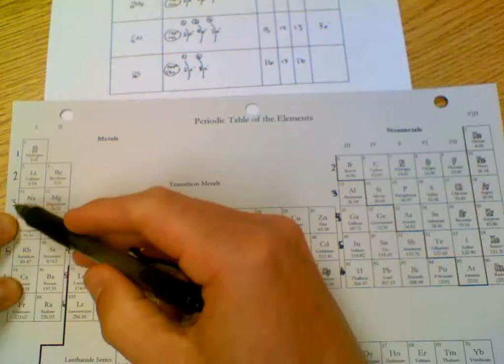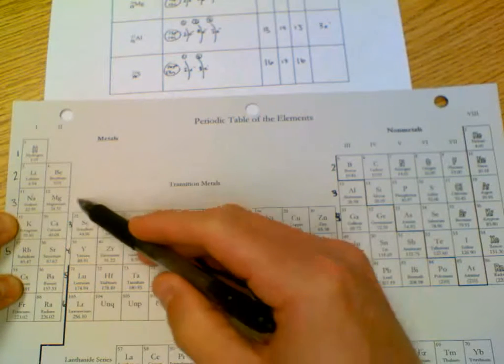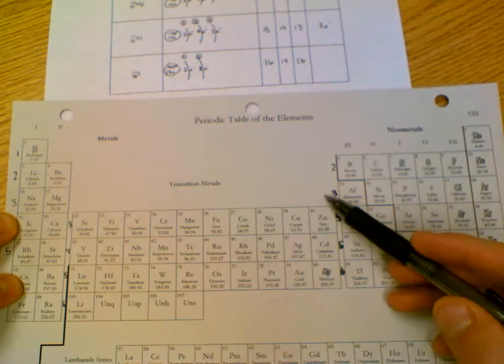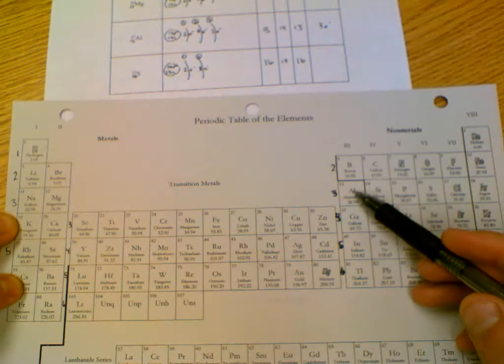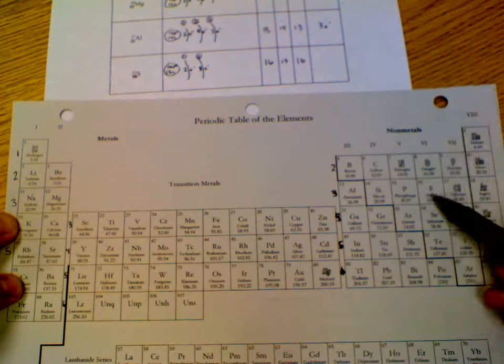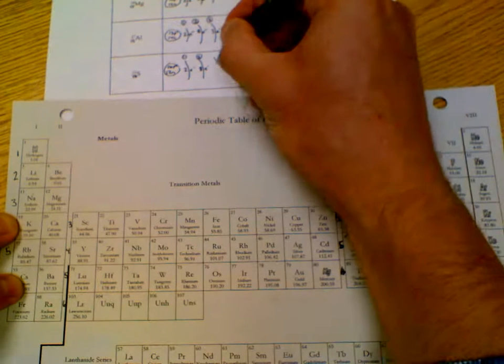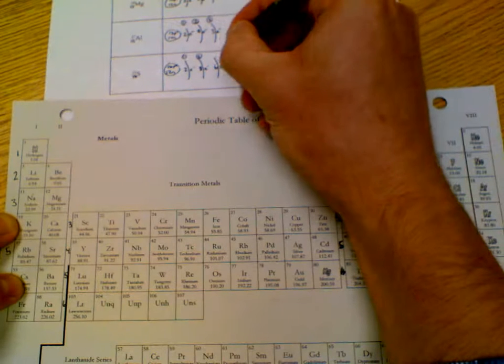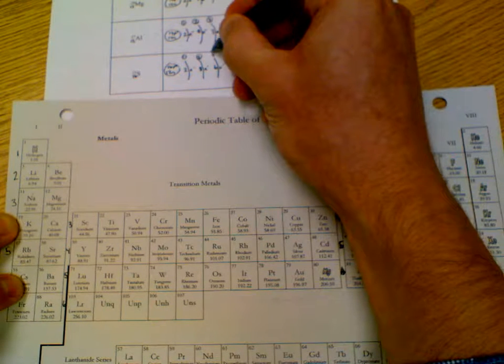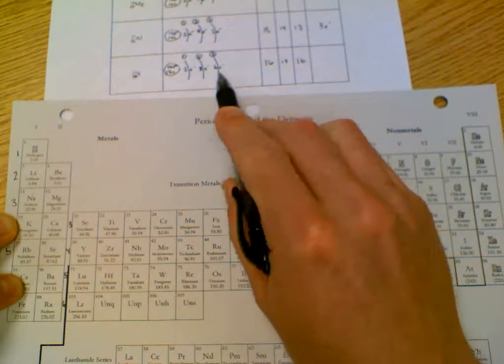Energy level 3. 1, 2, cross. Straight across. 3, 4, 5, 6. Energy level 3 has 6.